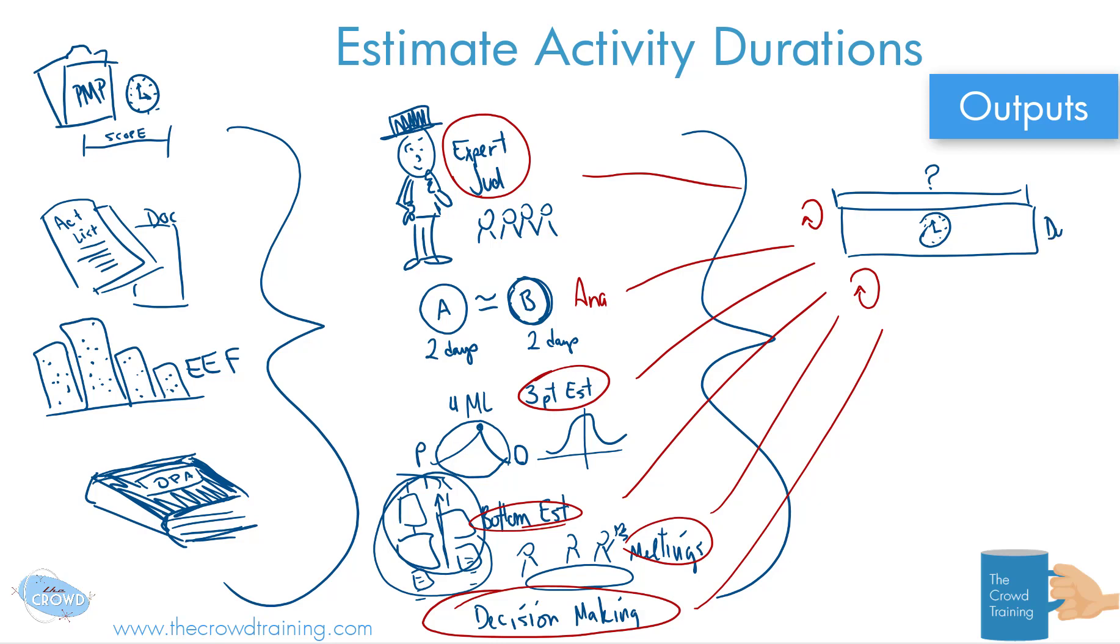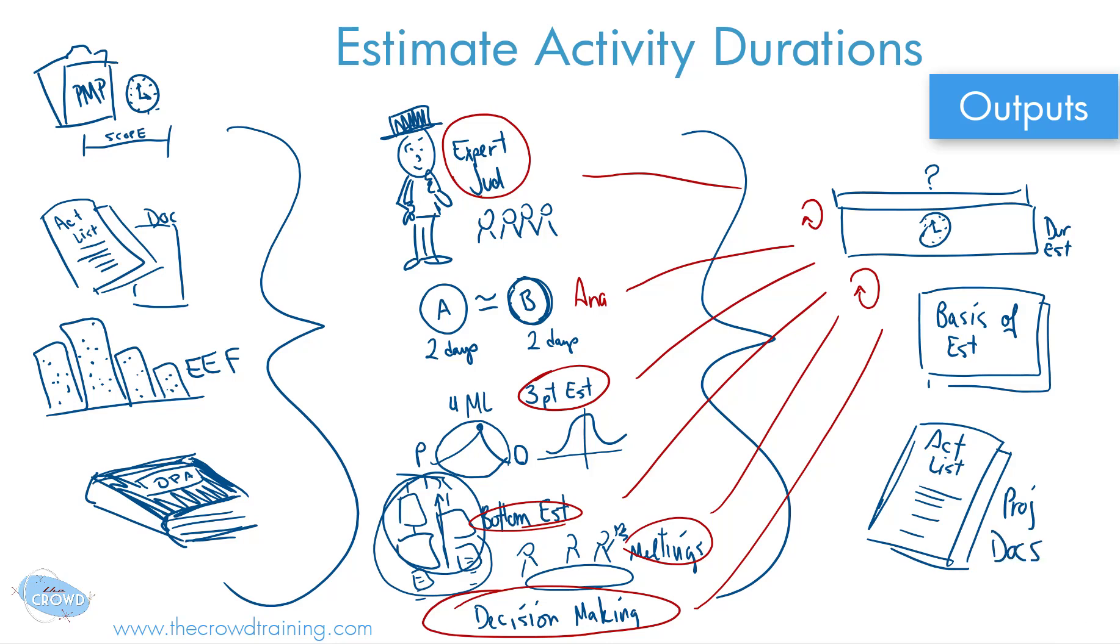That is our duration estimates, which is first and foremost. But based on that, we should have a reason, or what we call a basis of these estimates. What are we basing it on? Because if we have more information that negates it or supports it, that rationale should either hold up or we need to change it. Since we're using project documents, one being your activity lists, we probably should update that activity list and any other project document that is affected based on our learning from this process. That's a quick review of the estimate activity durations process of the sixth edition of the PMBOK from the crowd training.